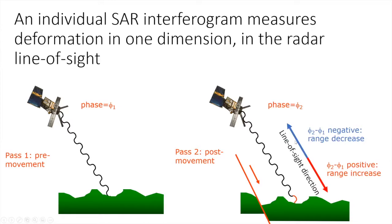If the ground moved up, the range would have decreased between the satellite and the ground and you would record a range decrease in your interferogram. In the case shown, the phase difference is positive, indicating the range has increased. We often use the terms range change, range increase, and range decrease to describe how far the ground moved and in which direction. The key point is that the displacement measurement is in terms of the line-of-sight direction — it's all to do with whether the ground moved towards or away from the satellite.